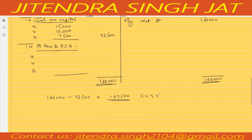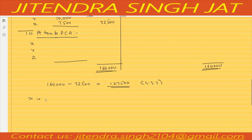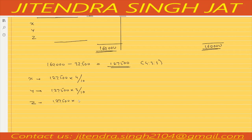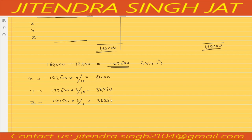X will get 1,27,500 multiplied by 4/10, Y will get 1,27,500 multiplied by 3/10, and Z will also get 1,27,500 multiplied by 3/10. Calculating: X gets 51,000, Y gets 38,250, and Z also gets 38,250.